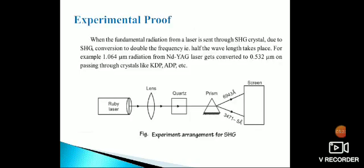The experimental proof for this: when fundamental radiation from a laser is sent through an SHG crystal, conversion to double the frequency (half the wavelength) takes place. For example, 1.064 micrometer radiation from Nd:YAG laser gets converted to 0.532 micrometer on passing through crystals like KDP (potassium dihydrogen phosphate) or ADP (ammonium dihydrogen phosphate). These are examples of nonlinear optical materials.